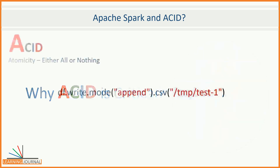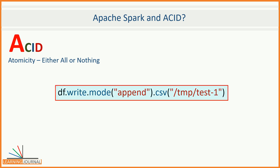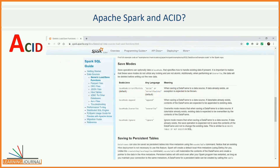The A in ACID stands for Atomicity. Basically, it means either all or nothing. So when you are using Spark DataFrame Writer API, it should either write full data or nothing. Let's quickly look at the Spark documentation. What does it say? It is important to realize that these save modes do not utilize any locking and are not atomic.